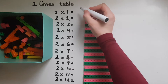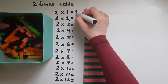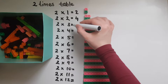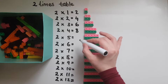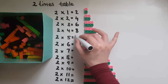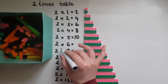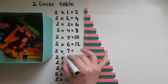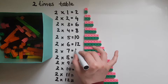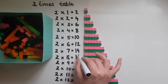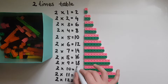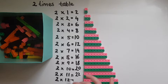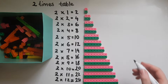So the first one: one and one makes two, two and two makes four, three and three makes six, four and four makes eight. Two times five is ten, two times six is twelve, two times seven is fourteen, two times eight is sixteen, two times nine is eighteen, two times ten is twenty, two times eleven is twenty-two, two times twelve is twenty-four.